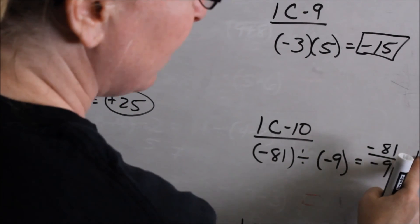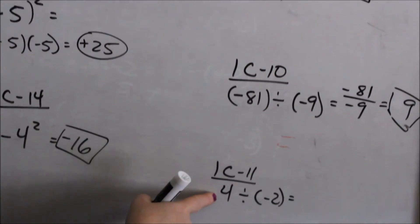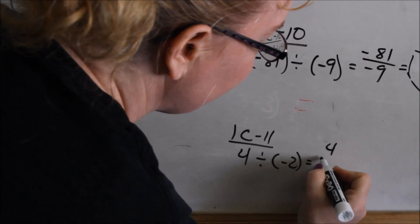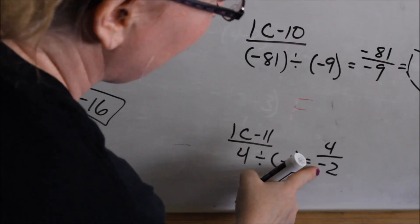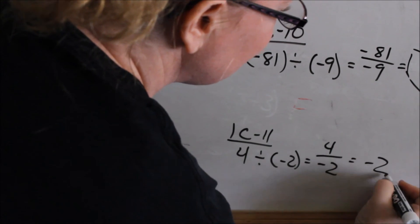You don't have to write the positive sign. If you just write 9, that implies positive. Looking at 1C11, you have 4 divided by negative 2. A positive divided by a negative is a negative. And 4 divided by 2 is 2.